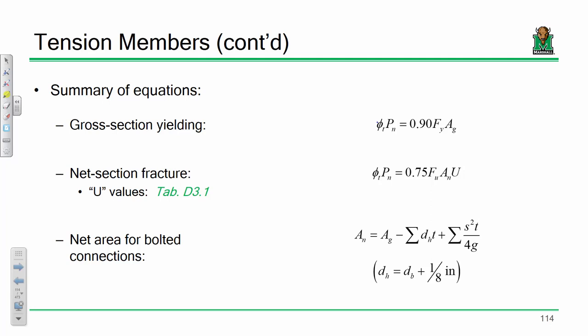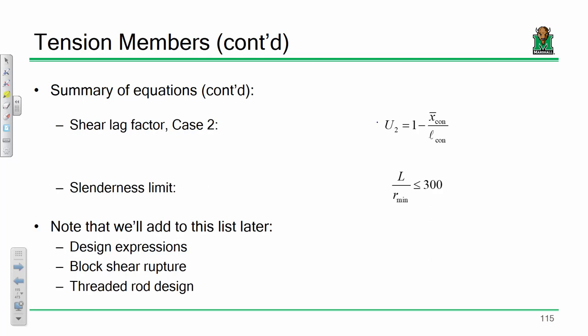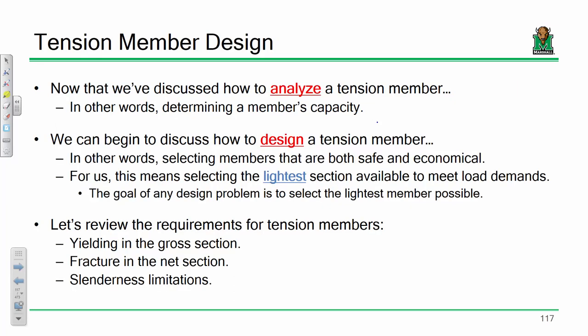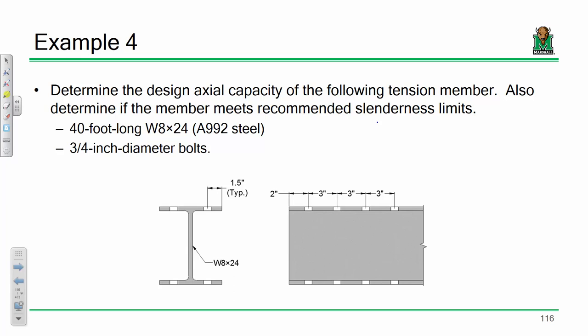Slide 114 in the notes has a summary of all the equations we've developed so far: gross section yielding, net section fracture, U-values, net area for bolted connections, shear lag factor for case 2, and the slenderness limit. We'll add block shear rupture equations and threaded rods later. When we come back on Monday, we'll do a full-blown tension member example start to finish to find its full capacity. After that, we'll move into design. Have a wonderful weekend — see you Monday.